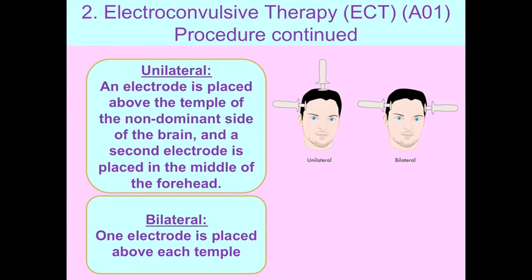The patient receives between 3 and 15 treatments, though the video shows experimental conditions where people have a monthly top-up of ECT in certain parts of the country. The other procedure detail you need to know is unilateral versus bilateral. Unilateral involves the electrode being placed on the temple and in the middle of the forehead, whereas bilateral is either side of the brain — an electrode placed above each temple. That's your AO1 outline of ECT.